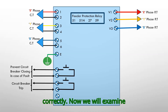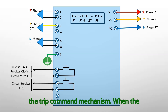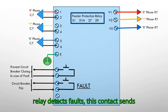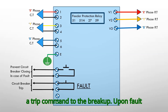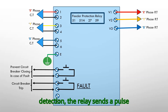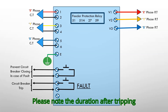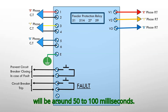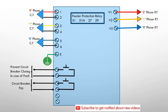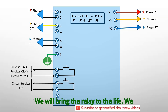Now we will examine the trip command mechanism. When the relay detects faults, this contact sends a trip command to the breaker. Upon fault detection, the relay sends a pulse command to the tripping coil and initiates immediate breaker tripping. Please note, the trip duration will be around 50 to 100 milliseconds.